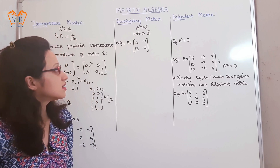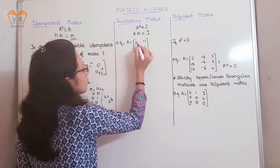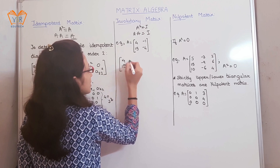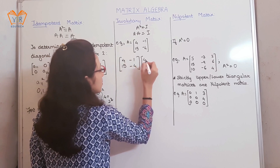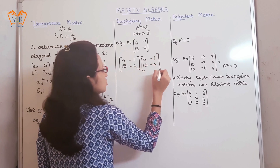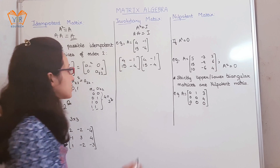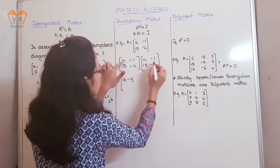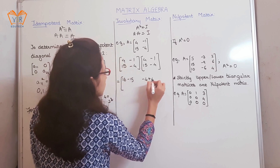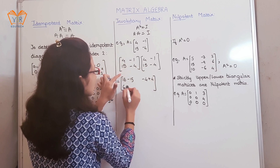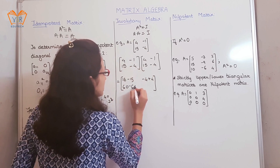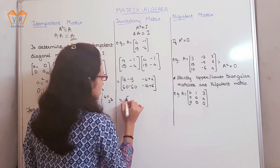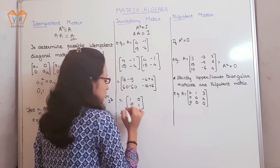Let us consider one example: A equals [4, -1; 15, -4]. As the definition says, when multiplied by itself, the result should be the identity matrix. Going through the matrix multiplication: (4×4 + (-1)×15) = 16-15 = 1; (4×(-1) + (-1)×(-4)) = -4+4 = 0; (15×4 + (-4)×15) = 60-60 = 0; (15×(-1) + (-4)×(-4)) = -15+16 = 1. The result is [1,0; 0,1], which is the identity matrix.